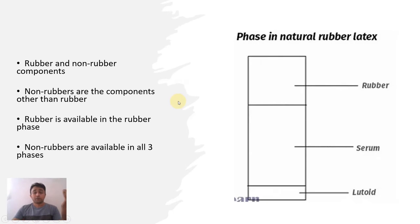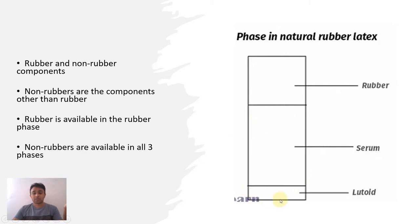If you centrifuge natural rubber latex, you will see three distinct phases: on top is the rubber phase, then the serum phase, and at the bottom is the bottom fraction which contains lutoids — small rubber particles. Non-rubber substances are present in the serum, and some amount of non-rubbers can also be seen in the rubber phase.